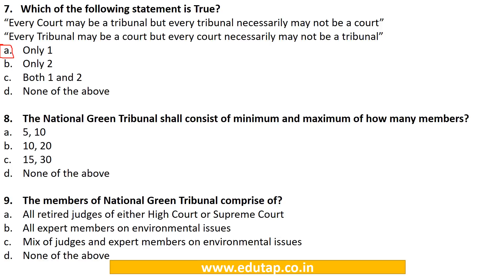MCQ 8: The NGT shall consist of a minimum and maximum of how many members? A. 5 or 10, B. 10 or 20, C. 15 or 30, D. None of the above. The correct answer is B. 10 or 20.